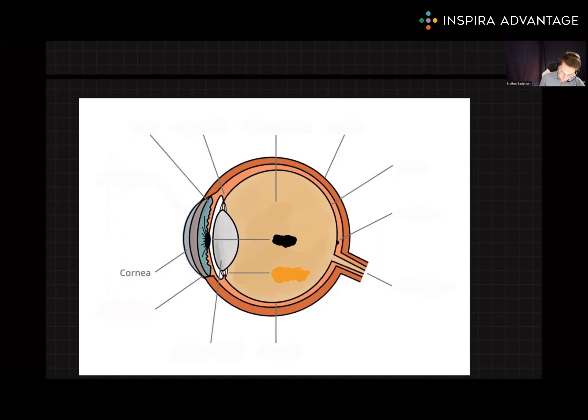So here is our cornea. If we follow it to the sides, we see it merges with the sclera, white but shown orange in this diagram. The sclera is this white outer portion of the eyeball.